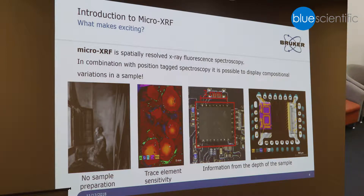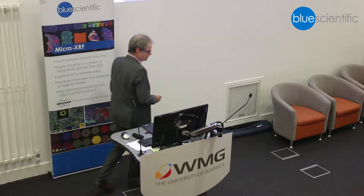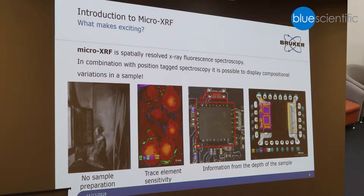Trace element sensitivity is another key feature. This is a garnet — a geological sample — where you see the elemental distribution from aluminum through to iron. Information depth is also a key feature. Here you see the video image of an integrated circuit, and the elemental distribution image gives you insight within the integrated circuit. You can see the gold bonding wires and the bonding pads coated with silver.